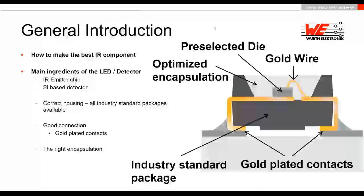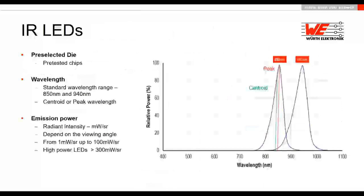In our production, we use two different wavelengths — 850 and 940 nanometers — as the two main emitting wavelengths of infrared. Infrared can be characterized by two different wavelength parameters: the peak wavelength and the centroid wavelength.